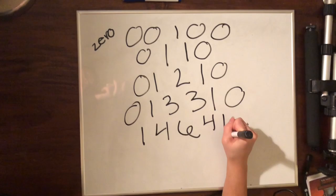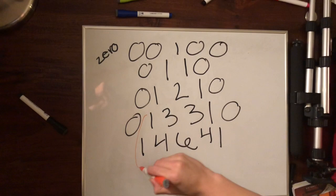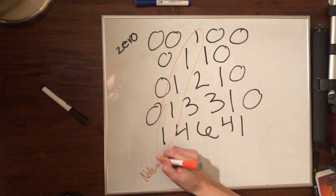So within the triangle, there are many patterns with it. The first diagonal is all ones, and this one is called natural numbers. The next diagonal is called the counting numbers, where they all just add up by one: one, two, three, and etc.